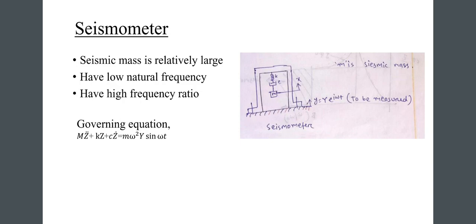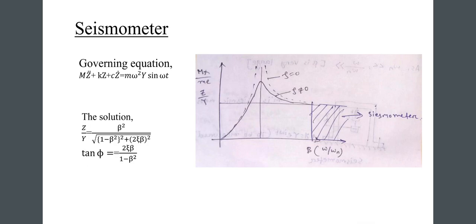For the seismometer: the seismic mass is relatively large, it has a low natural frequency and high frequency ratio. The governing equation is m·z-double-dot plus k·z plus c·z-dot equals m·omega²·Y·sin(omega·t), where m is the seismic mass and y equals Y·e^(i·omega·t) is the motion to be measured. The solution is z/Y equals beta² divided by sqrt[(1 minus beta²)² + (2·zeta·beta)²], and tan(phi) equals 2·zeta·beta / (1 minus beta²).